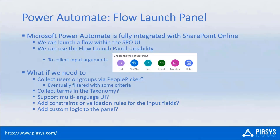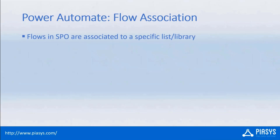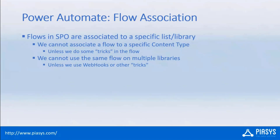All of these capabilities are unfortunately not available with the out-of-the-box flow launch panel, and that's why I want to show how you can leverage SharePoint Framework to do that. You can add custom logic and many other things. Also, in Power Automate you can associate a flow to a list or library, but you cannot associate a flow to a specific content type or use the same flow across multiple libraries without workarounds.